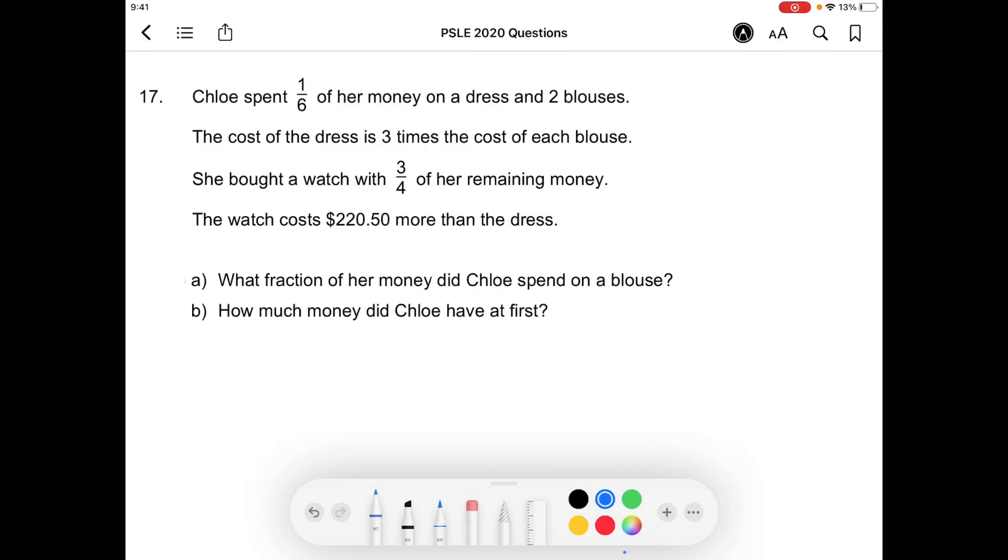Question 17. Chloe spent one sixth of her money on a dress and two blouses. The cost of the dress is three times the cost of each blouse, which means the blouse costs one unit and the dress costs three units. Going back to the first statement, she would have actually spent three units plus two units here, a total of five units on a dress and two blouses.